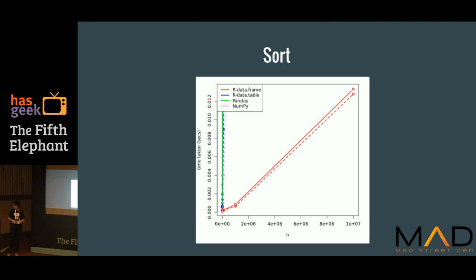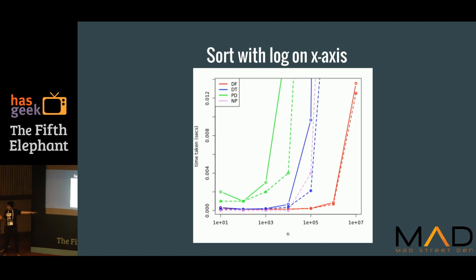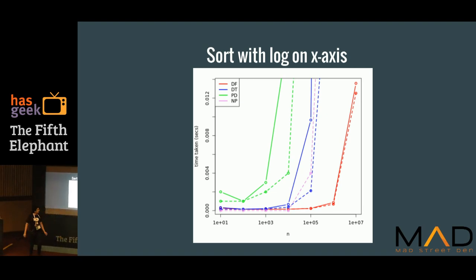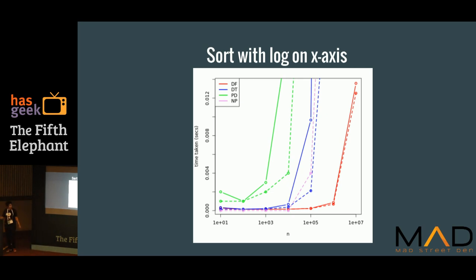Now this is something very interesting. You've seen that R data.frame is not so optimized and doesn't perform so well — but you see something very strange here. I've basically converted the x-axis to a logarithmic scale so you can actually understand who's standing where. Very surprisingly, R data.frame has done very well here. But if you look at the consistency, R data.table does very well overall.